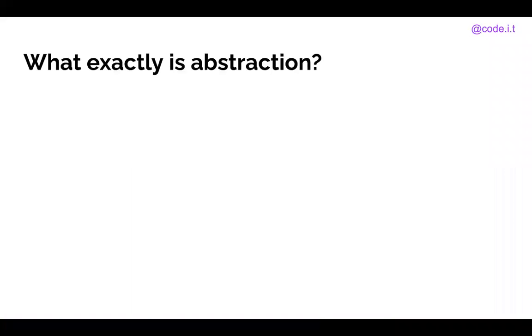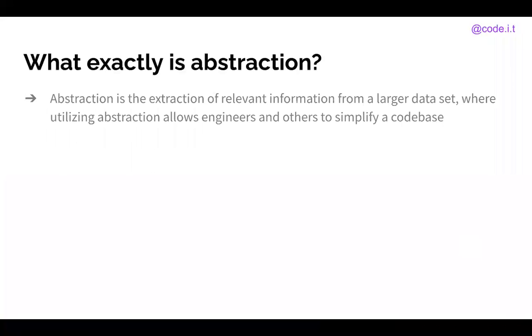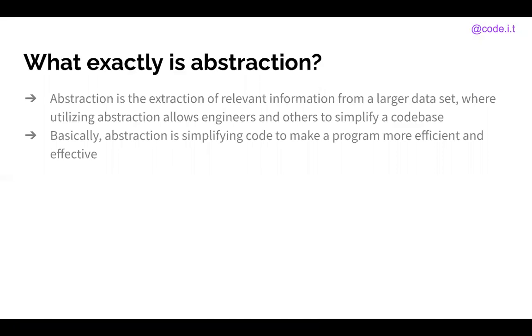So first of all, what exactly is abstraction? The official definition of abstraction is that it's the extraction of relevant information from a larger data set, where utilizing abstraction allows engineers and others to simplify a code base. So basically what that means is abstraction allows a programmer to simplify the code in their program to make it more efficient, effective, and really understandable to someone looking in.